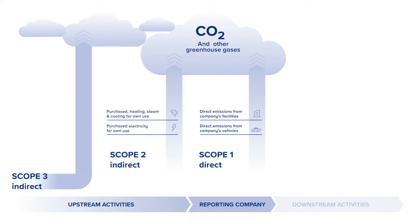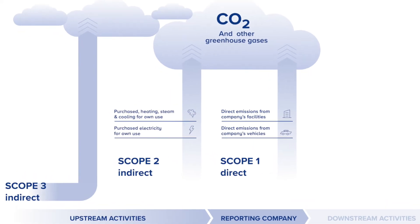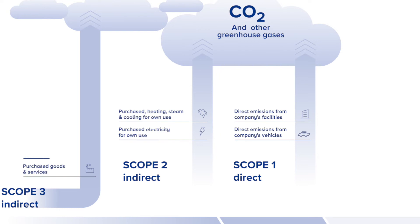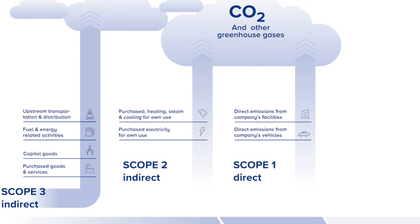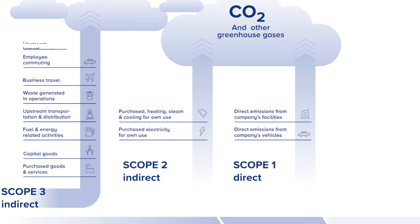Upstream emissions are related to purchased or acquired goods and services. These upstream emissions are classified in eight categories: Purchased goods and services, Capital goods, Fuel and energy related activities, Upstream transportation and distribution, Waste generated in operations, Business travel, Employee commuting, and Upstream leased assets.